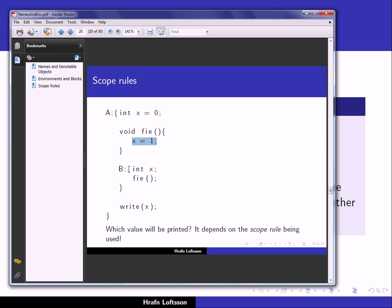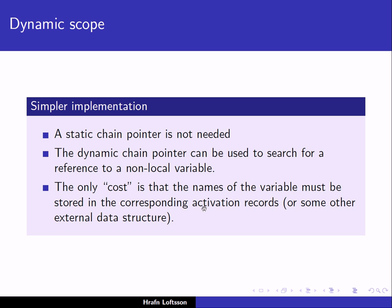However, even though dynamic scope is simpler in not needing a static chain pointer, it costs more because the names of variables must be stored in the activation records. To find X inside phi, we have to do a name search: travel through the dynamic chain to block B and search for the name X; if not found, follow the dynamic chain pointer to block A and search there. In static scope, by contrast, we travel an exact distance through the static chain, and that distance is computable at compile time.